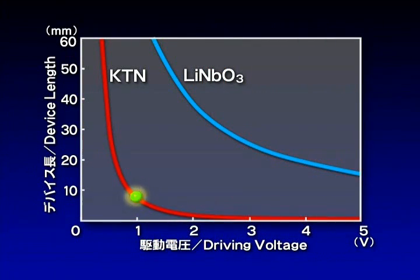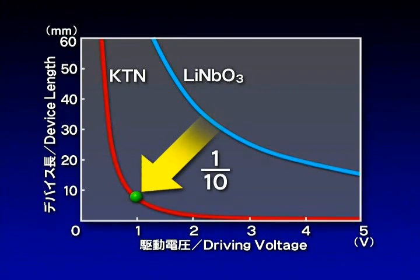The experiments show that 1.3 volts is enough to switch the optical output. The KTN crystals can reduce driving voltage and device size to one-tenth the present scale.